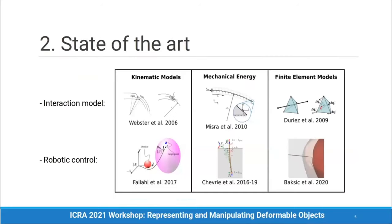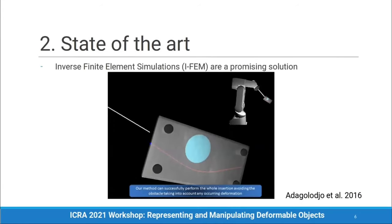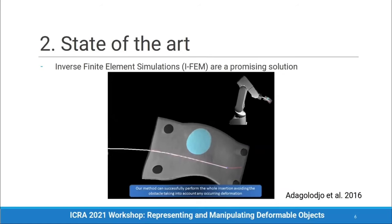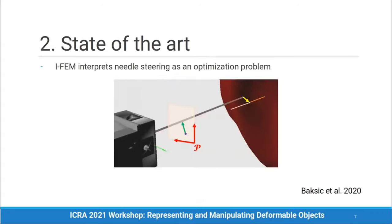The state of the art discusses many approaches to model needle steering and integrate it into robotic control. Both kinematic models and mechanical energy models assume needle insertion into stationary tissues and only account for needle deformation. Finite element models, however, are able to simulate both deformable bodies and their interactions. We take a closer look at the Basit et al. approach. The so-called inverse finite element simulations, or IFEM, are a promising solution — as shown in the video, they can perform needle steering in a complex trajectory while accounting for soft tissue deformations.